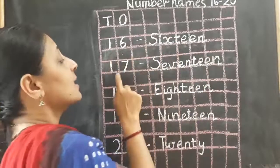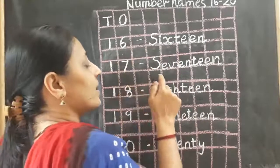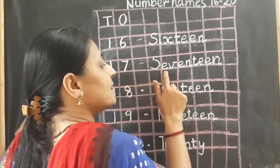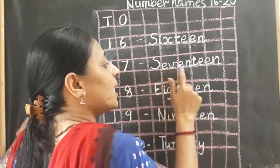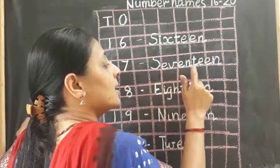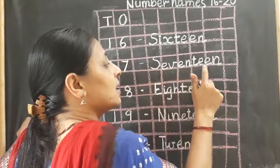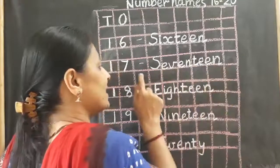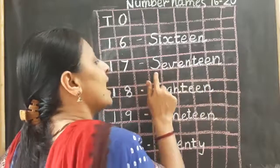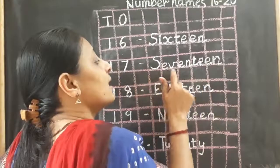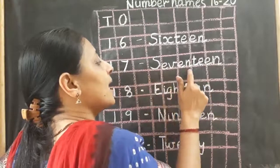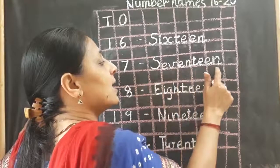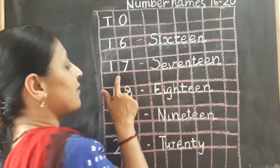Now we will see the number name of 17. S, E, V, E, N, T, E, E, N. 17. Once again: S, E, V, E, N, T, E, E, N. 17.